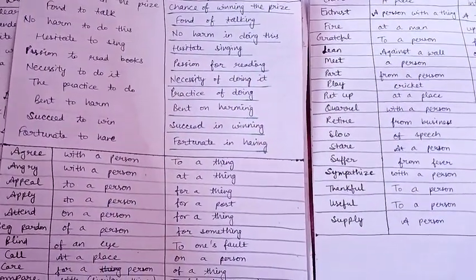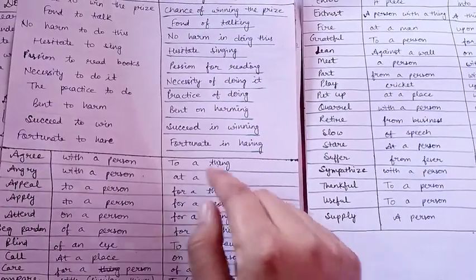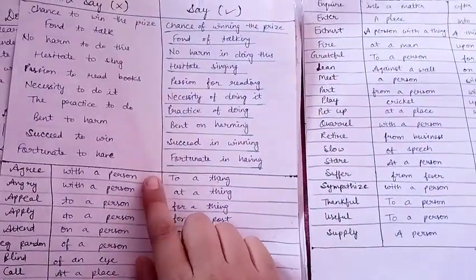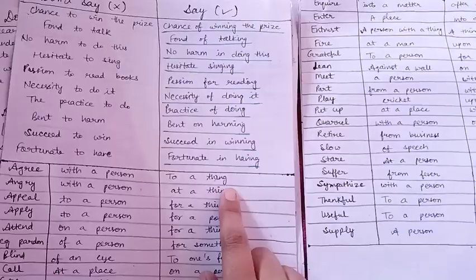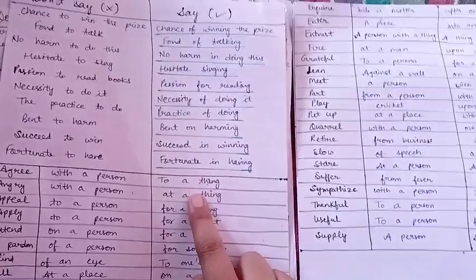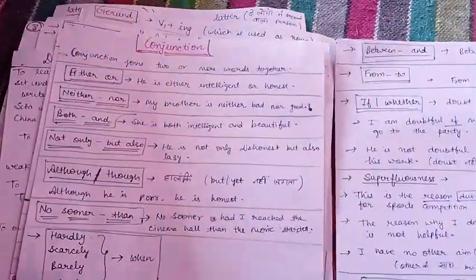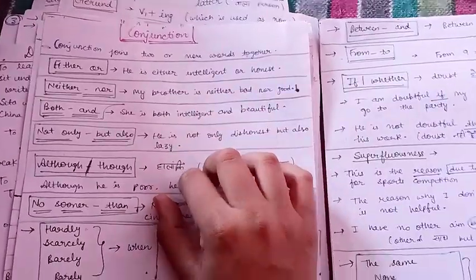These things also help us find errors and increase our marks. For example, we agree with a person but we agree to a thing — if a person is given we use 'with,' but if a thing is given we use 'to.' Then there are notes for conjunctions as well.